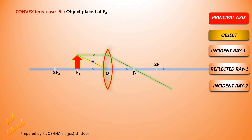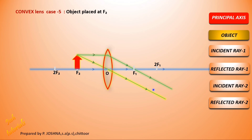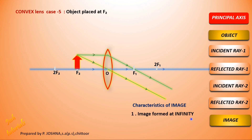The second ray passes through the optic center and goes undeviated — straight away. Look at these two refracted rays: they are perfectly parallel and do not meet. Since they do not meet, the image is formed at infinity and we cannot define its characteristics precisely.